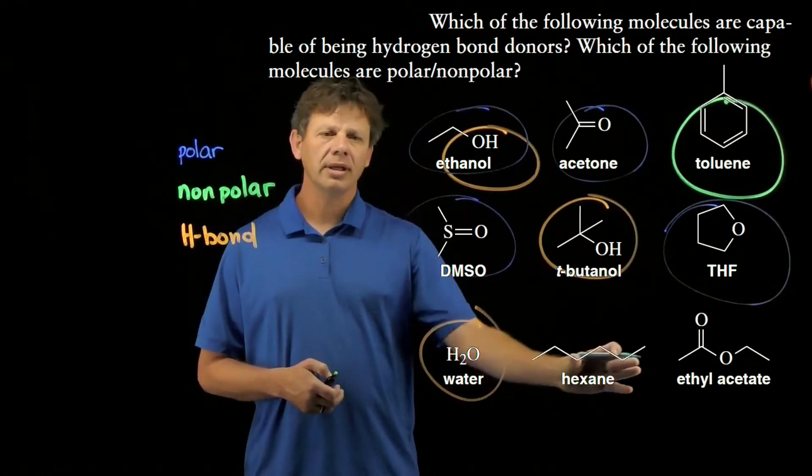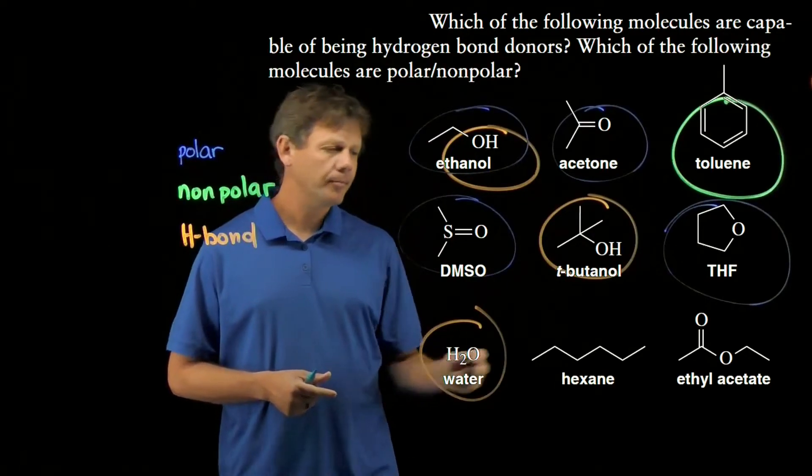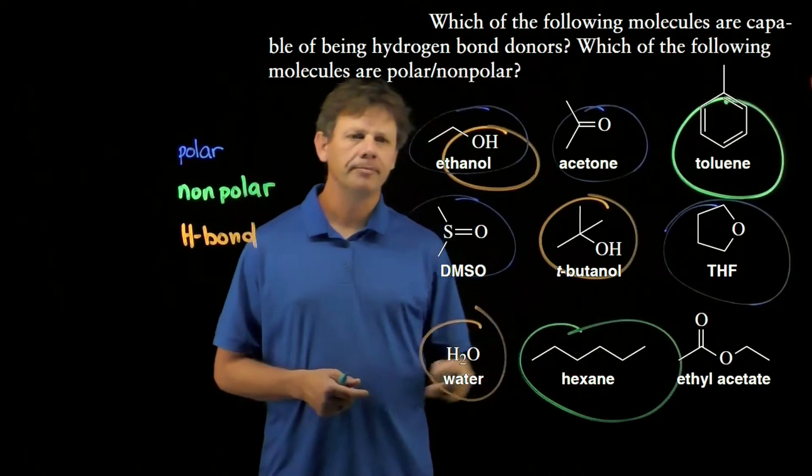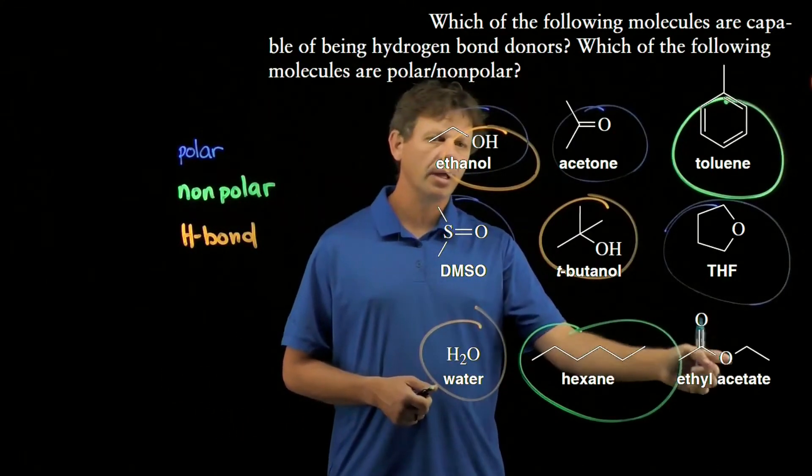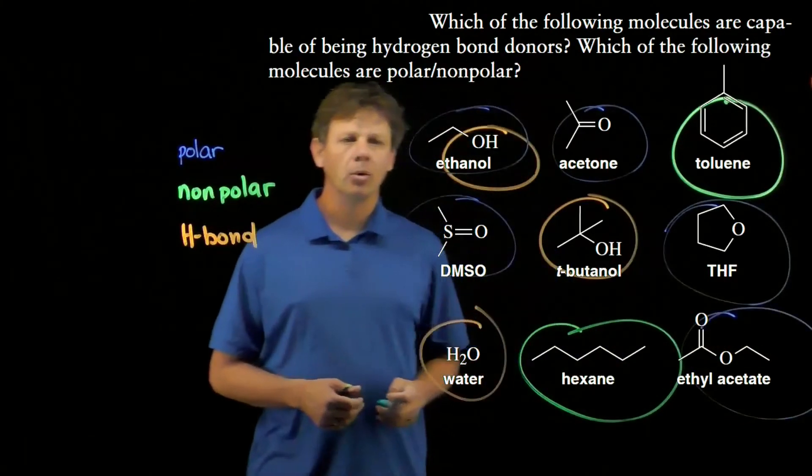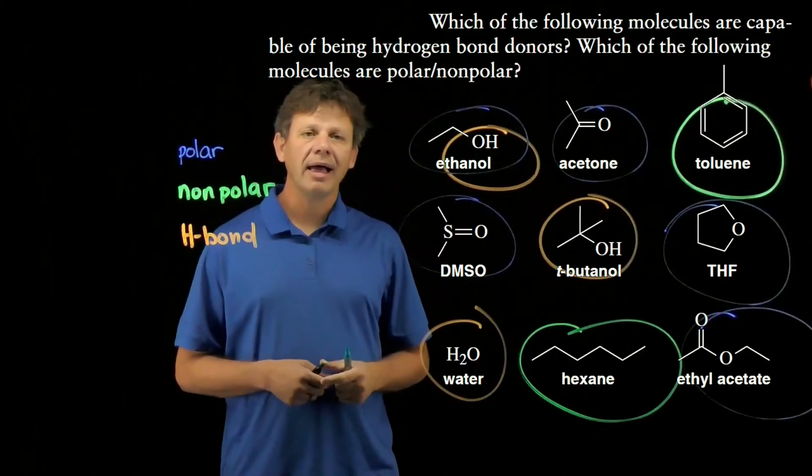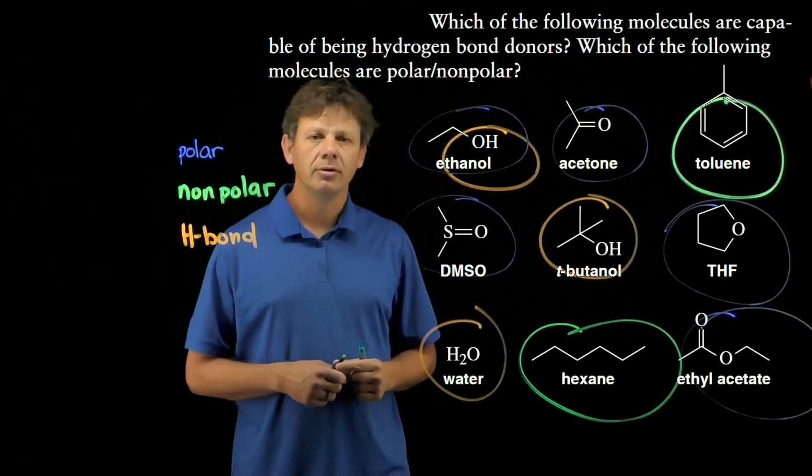Hexane, containing only carbon and hydrogen bonds, so no electronegative atoms there, is a nonpolar molecule. And finally, ethyl acetate containing the carbon-oxygen double bond and the carbon-oxygen single bond will also be a polar molecule. And so that classifies them as polar, nonpolar, or hydrogen bond donors.